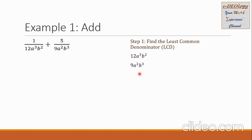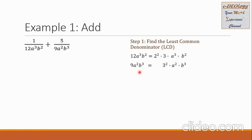First, we collect all the denominators and factor them. For the numbers we use prime factors, and for the variables we list them as they are. So 12a³b² factors into 2² × 3 × a³ × b². And 9a²b³ factors into 3² × a² × b³. We put common factors in the same column.